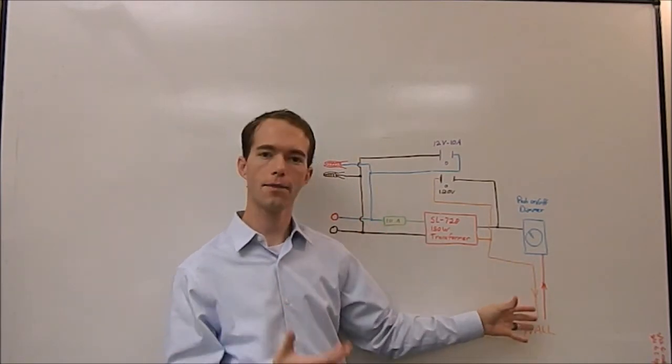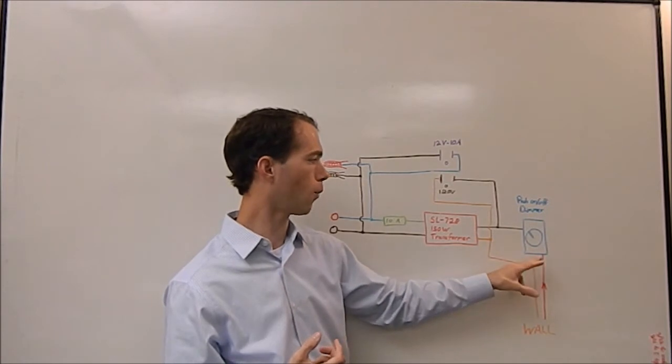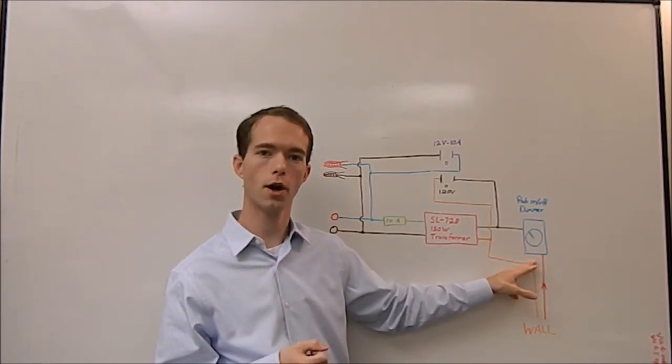The way this works is I cut the cord off an old extension cord, cut the female end off, and wired the hot side into my push on off style dimmer.